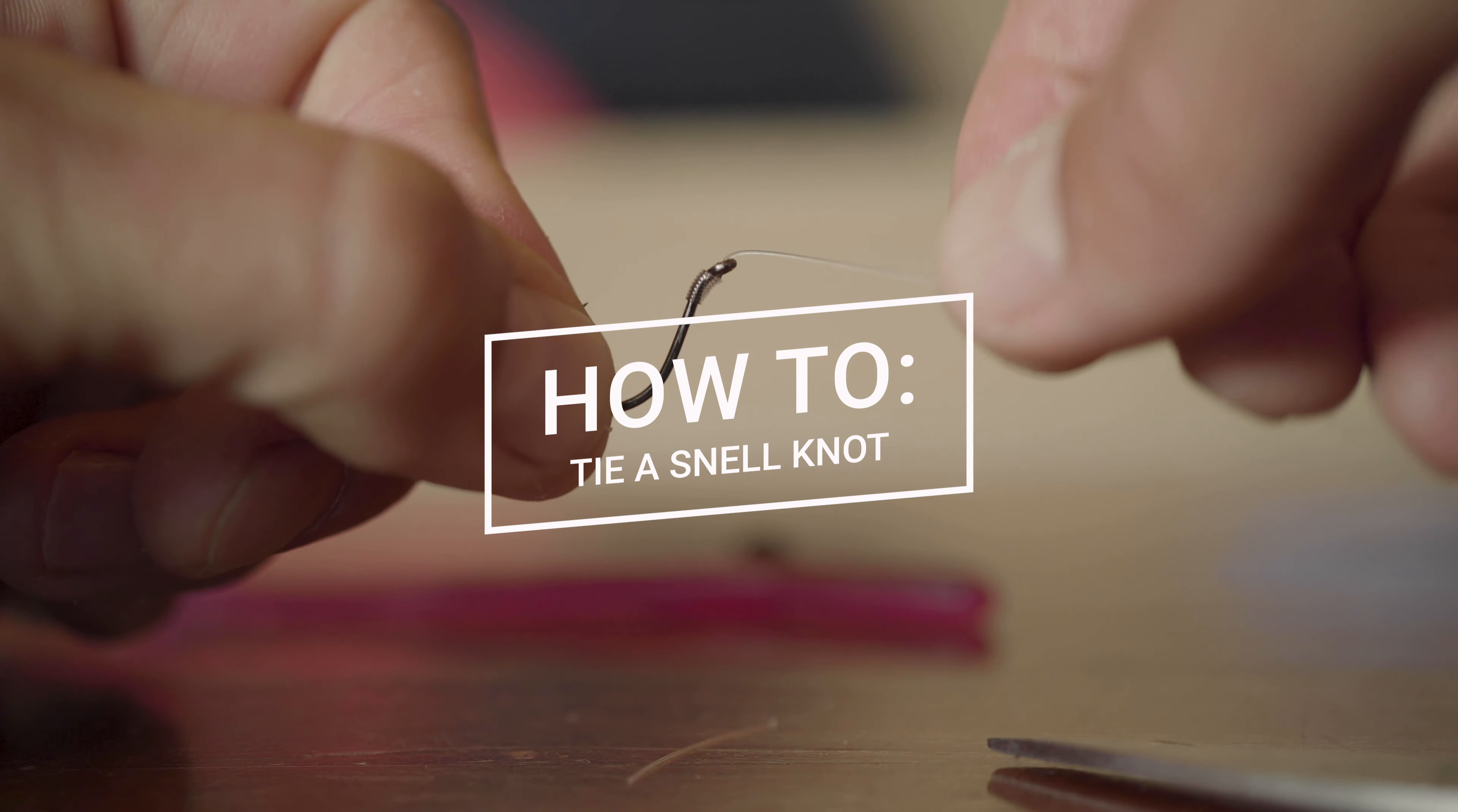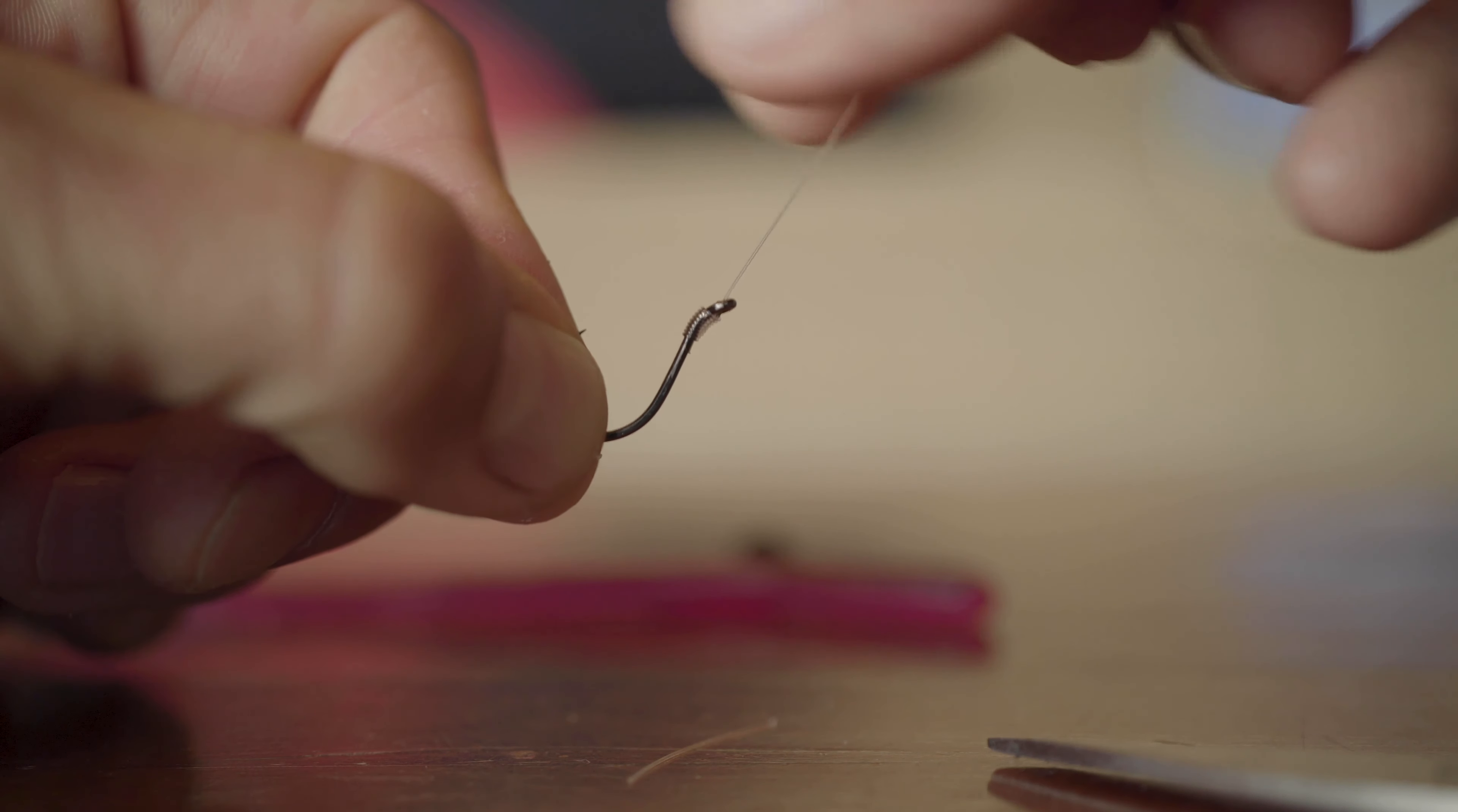The snell knot is a great knot for vertical fishing or situations where you need to set the hook and the line pulls back on the eye of the hook, sending it pushing upwards, which increases hook percentages when you're fishing vertically.